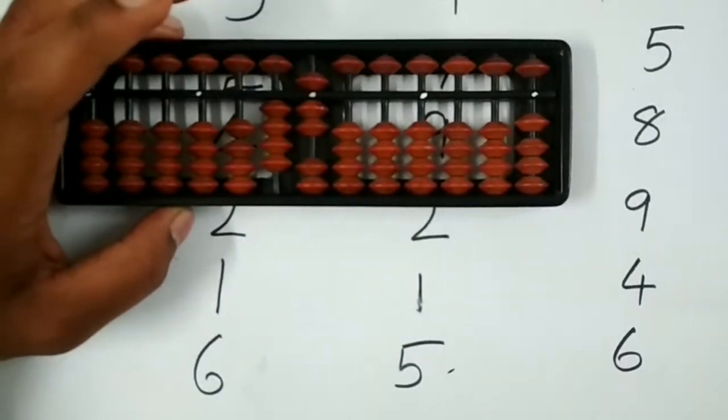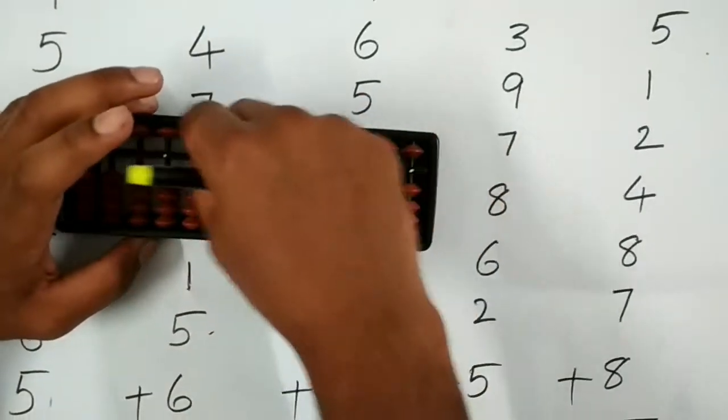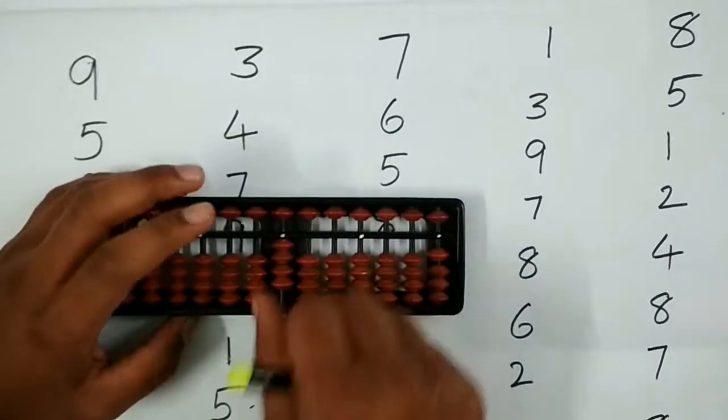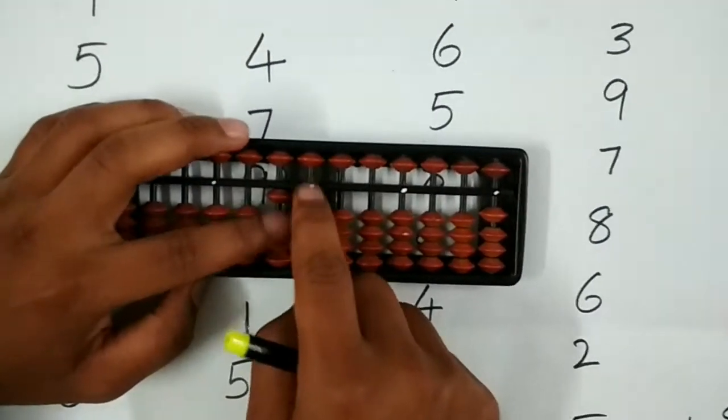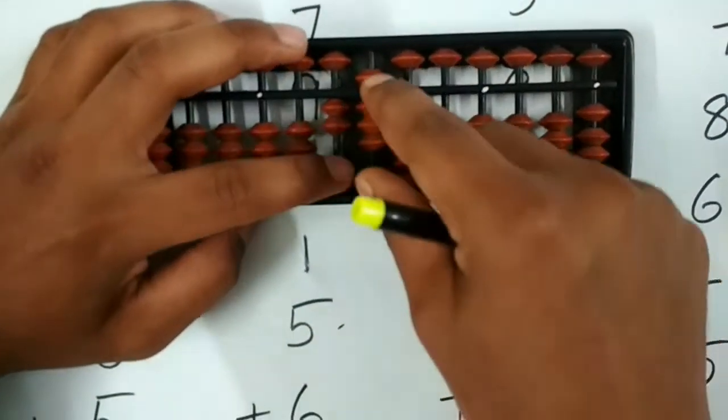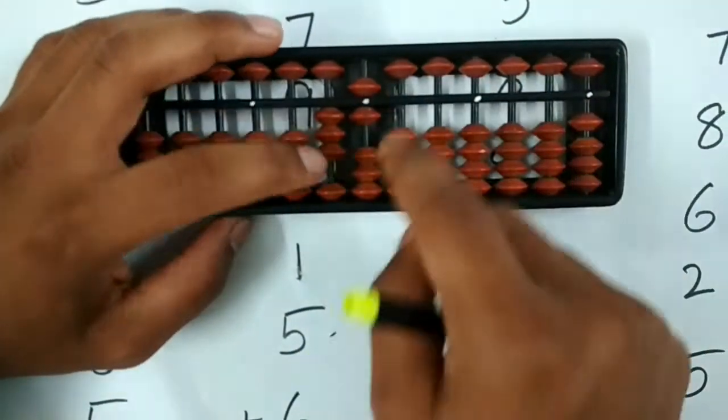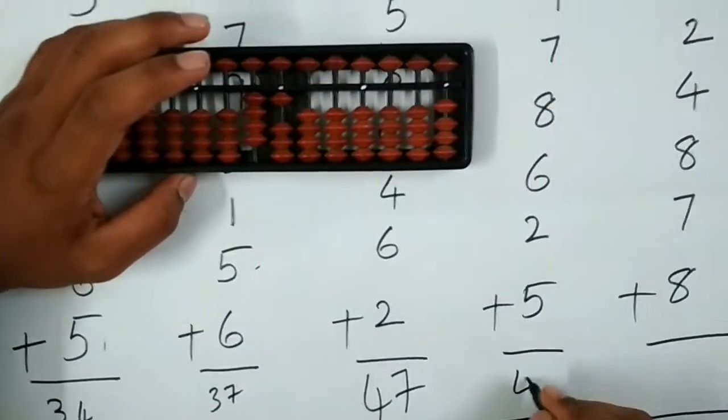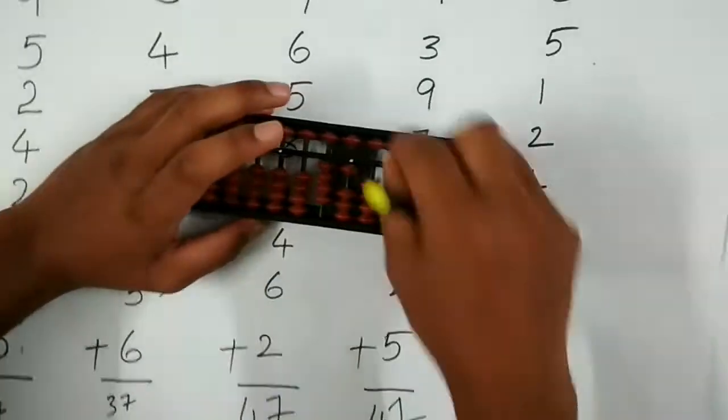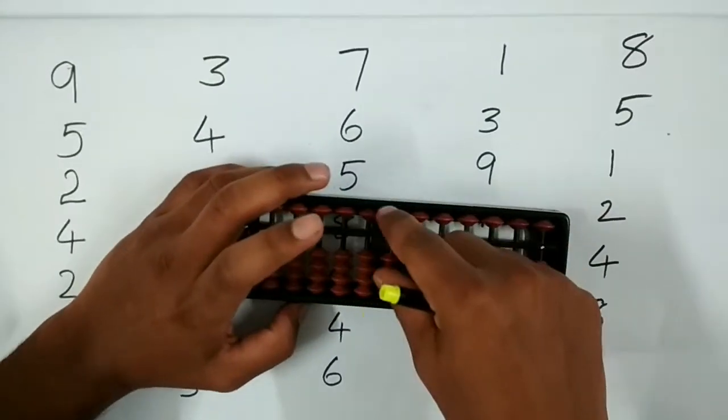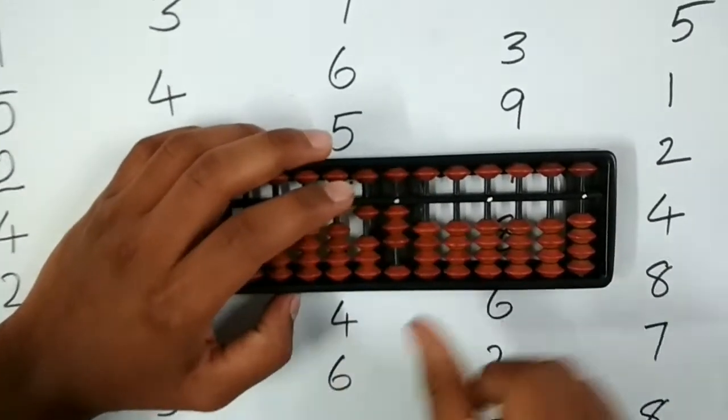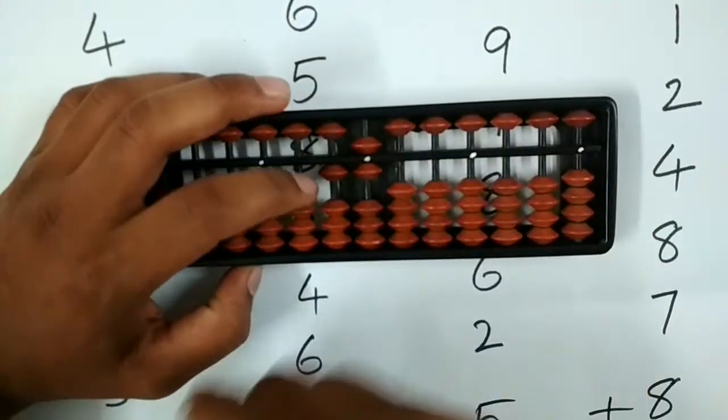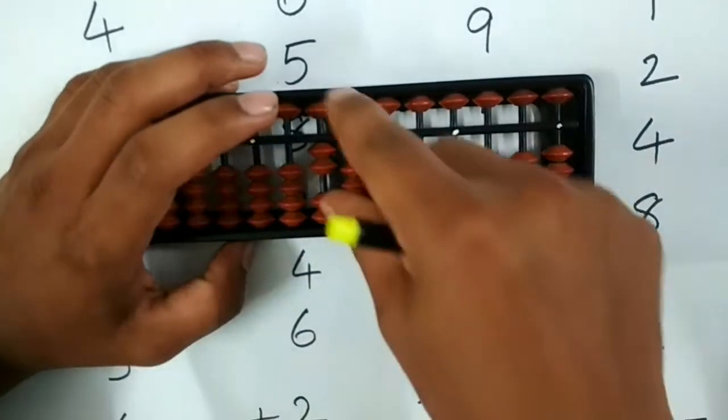is 47. Next: 1, 3, 9, 7, 8, 6, 2, 5. The answer is 41. Next: 8, 5, 1, 2, 4, 8,